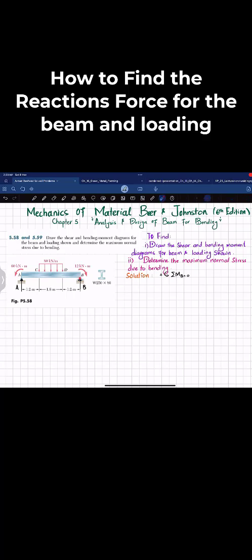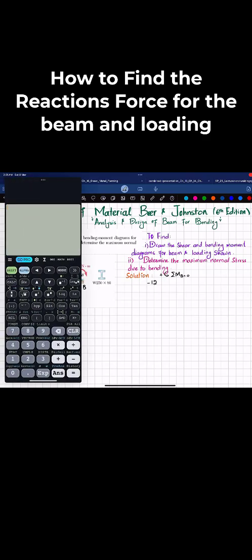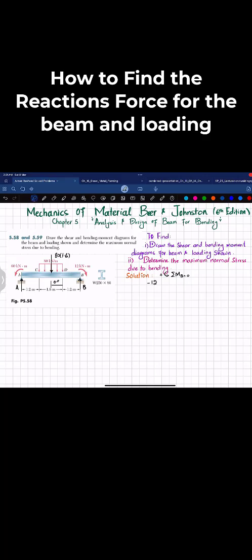About point B, the first moment is 12 kilonewtons which is clockwise, so I'll take it as negative. The second moment is due to this distributed load. When converted to a point load, it equals 80 multiplied by 1.6, acting at a distance of 1.6 divided by 2, which is 0.8 meter.